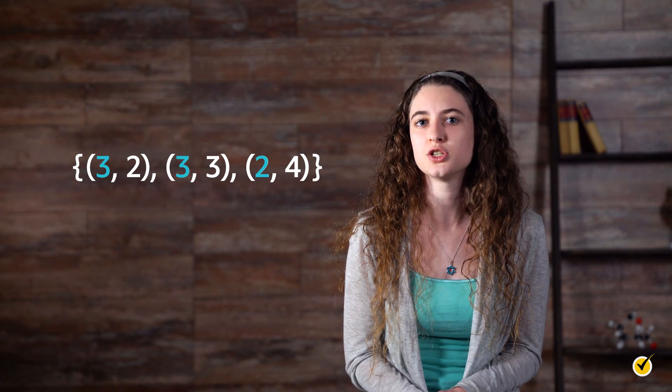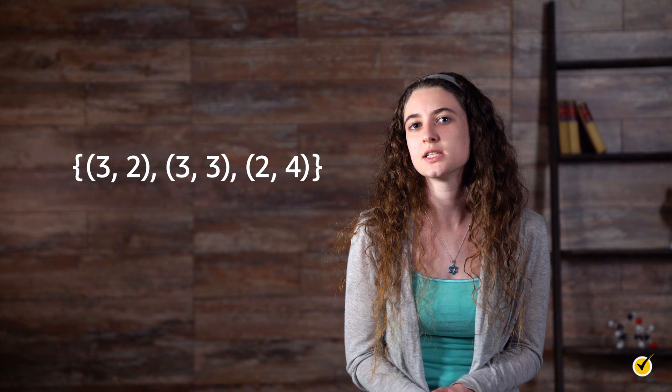What about this set? 3, 2; 3, 3; and 2, 4. In this set, the domain values are 3 and 2. And the range values are 2, 3, and 4. Because the domain value of 3 is paired with 2 and 3 in the range, this relation is not a function.